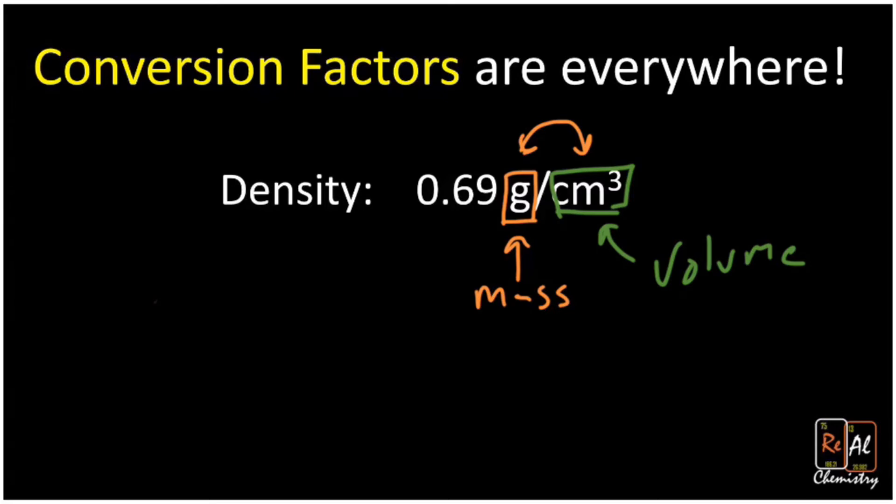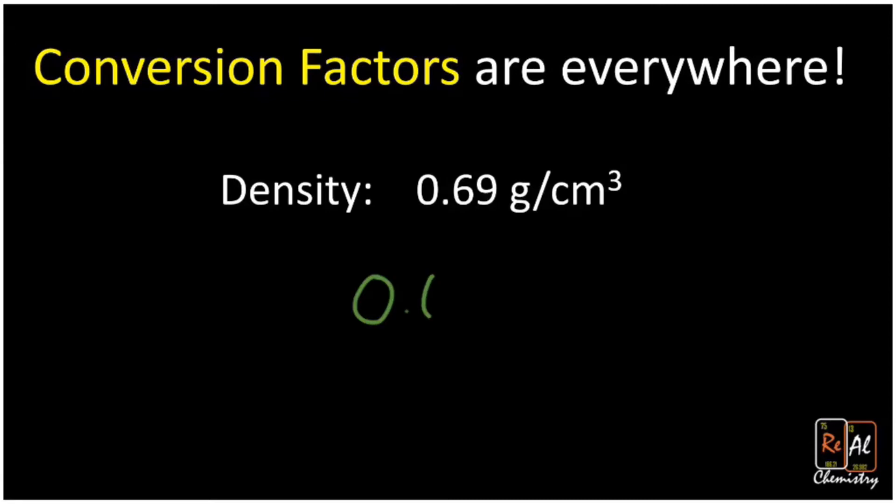To be able to use it as a conversion factor, it's first useful to be able to write it as an equality. What that means is if you write this as an equality, I can say that 0.69 grams is equal to one cubic centimeter. So what that means is in the context of a problem with this density, every single 0.69 grams you have is equal to one cubic centimeter. So the trick to writing this is you just take the unit on the bottom here, and you put a one in front of it in your equality. So it's 0.69 grams to one cubic centimeter.